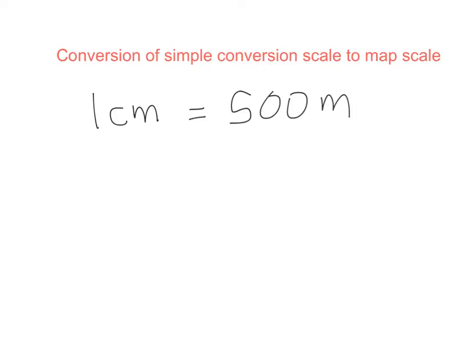We can convert from a simple conversion scale, like the one we have here, to a map scale. The way we do it, always we have to remember that this is the map and this is real life. Convert one of the units, so both units are the same. As this one is already 1 centimeter, the easiest way would be to convert this one to centimeters.